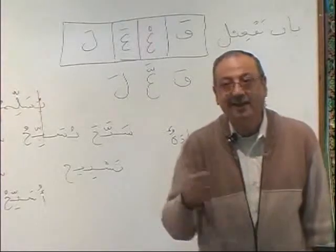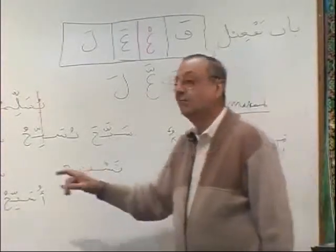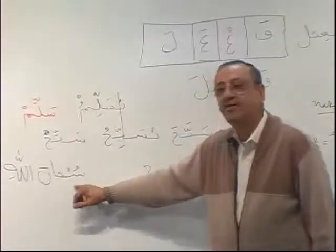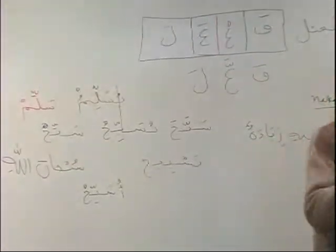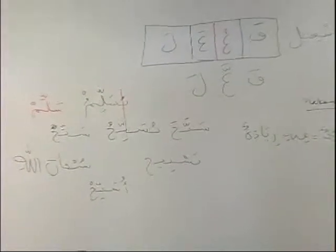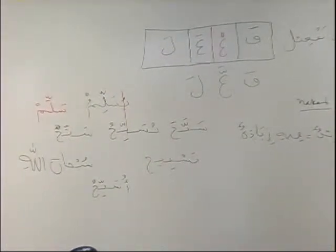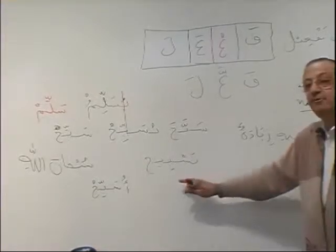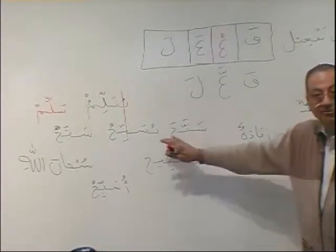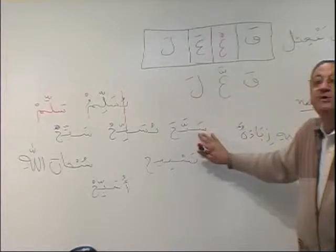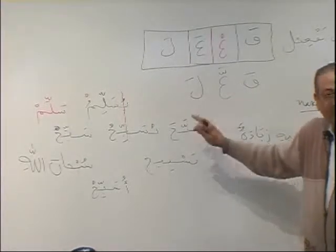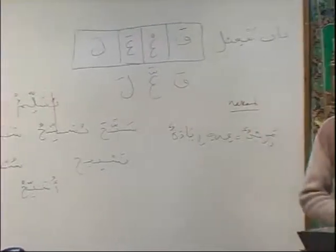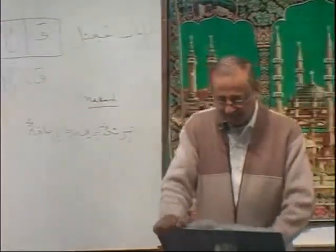Nobody will know unless you study the language. So subhana — you can say usabbihu or nusabbihu — and subhana Allah is your maf'oolun mutlak, just like shukran, sabran, afwan. There are only two verbs on this pattern that I recall, brother. Subhana Allah I explained — it comes from sabbaha.